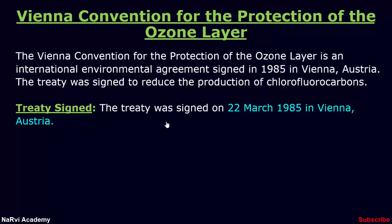The treaty was signed on 22nd March 1985 in Vienna, Austria. The Vienna Convention was the first convention of any kind to be signed by all countries in the world, taking effect in 1988 and reaching universal ratification in 2009.